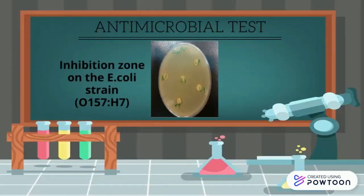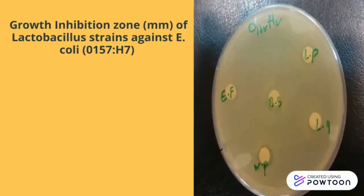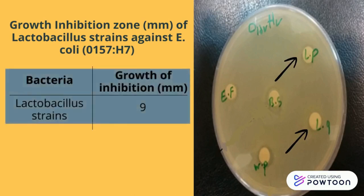We will move to antimicrobial test to show antimicrobial effect toward E. coli. From this figure, you will see inhibition zone on E. coli strain which is O157:H7. After we measure the zone of inhibition, it shows 9mm of clear zone around the disc.